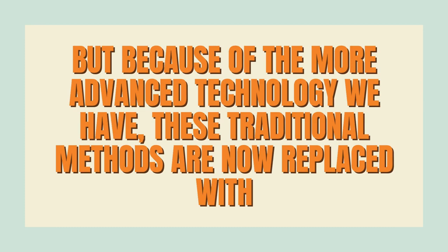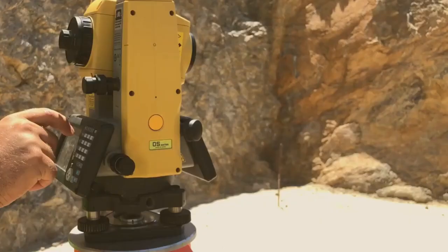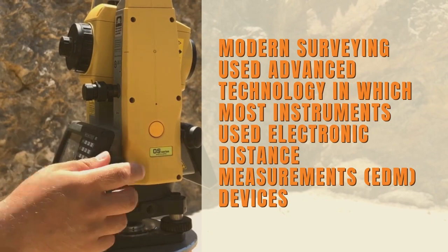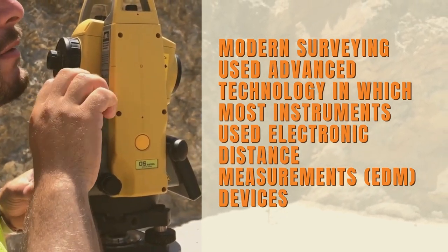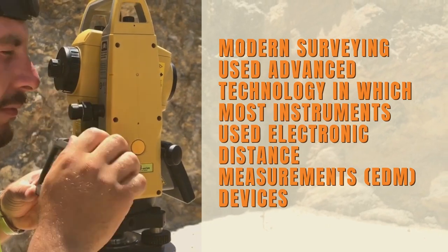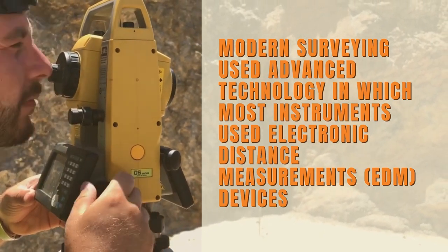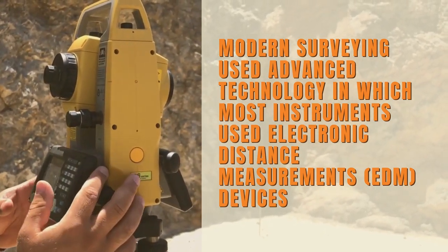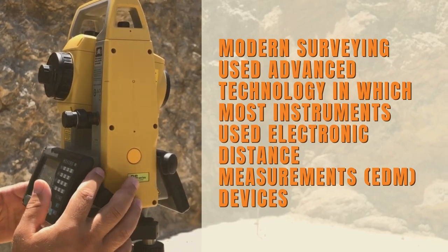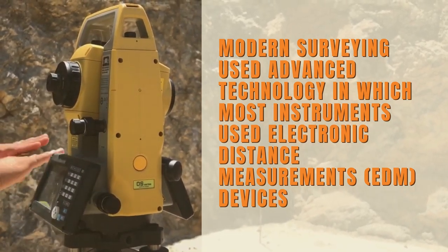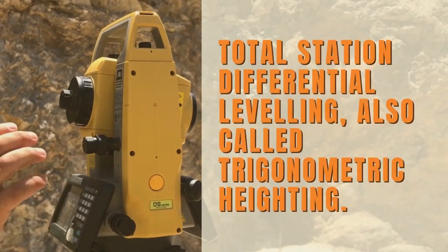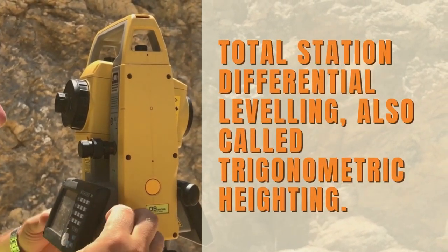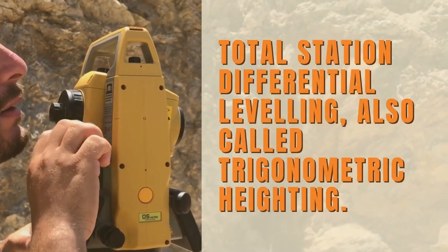In modern surveying, most of the instruments used are electronic distance measurements (EDM) devices, such as total stations, to measure vertical and horizontal distances. This instrument is used in the method known as Total Station Differential Leveling, also called trigonometric leveling.